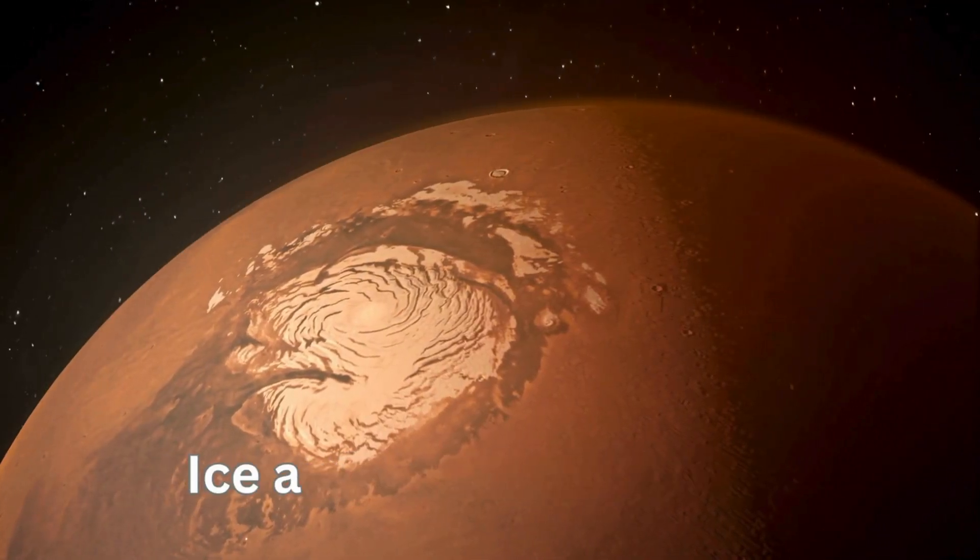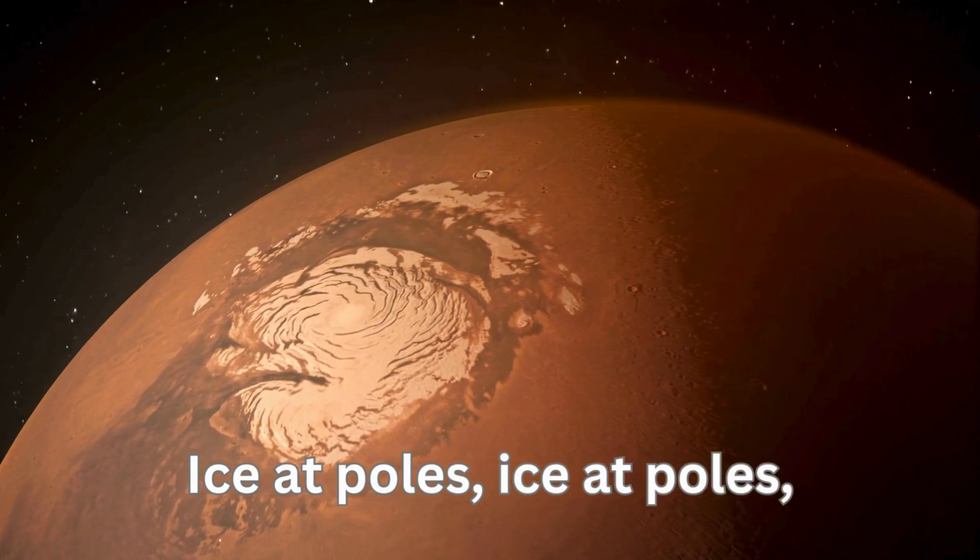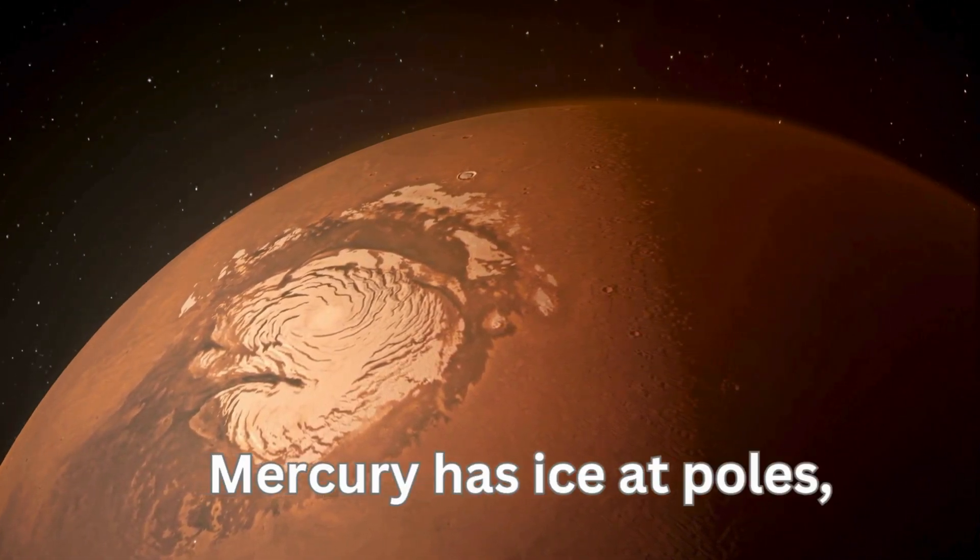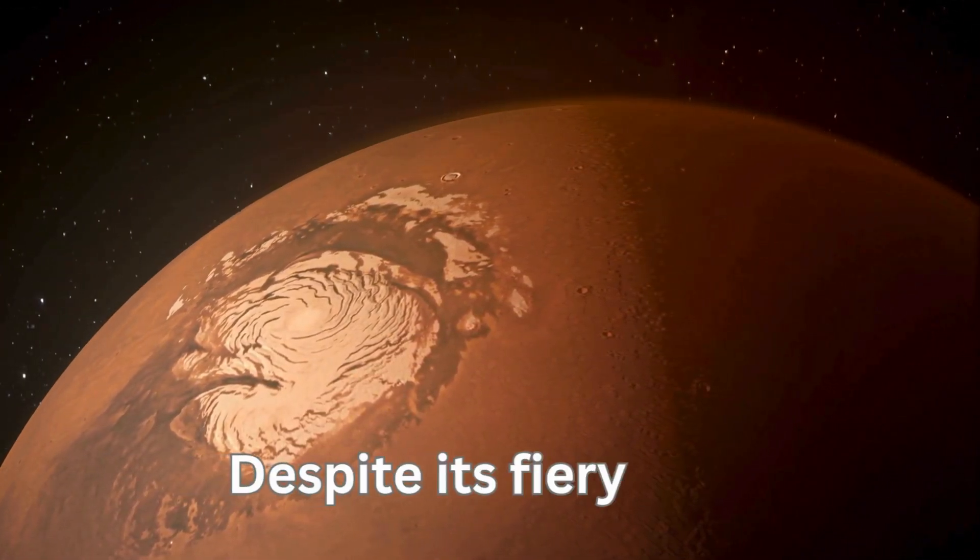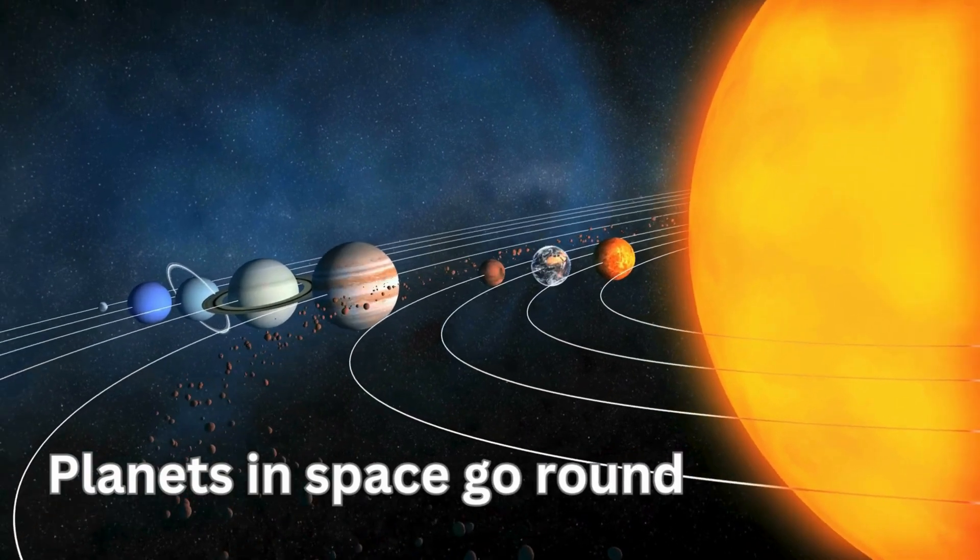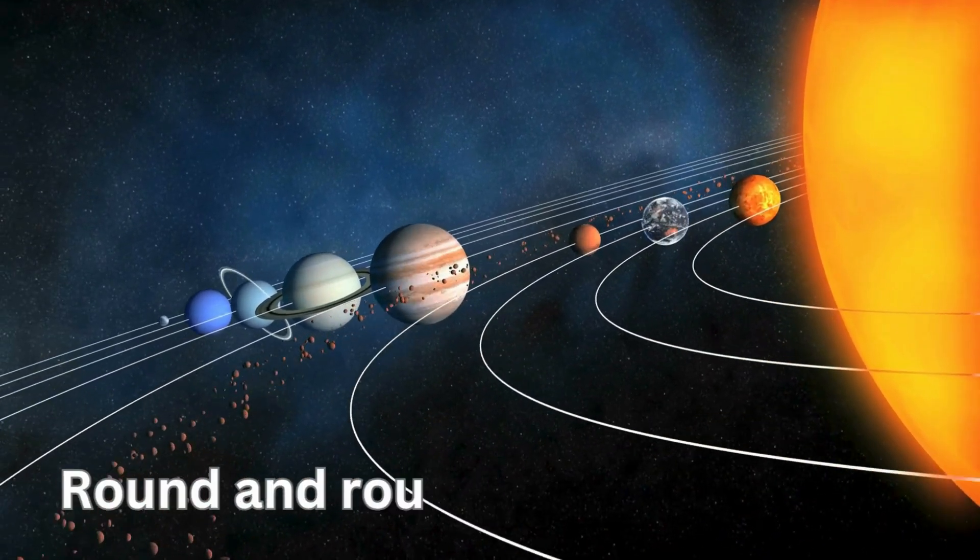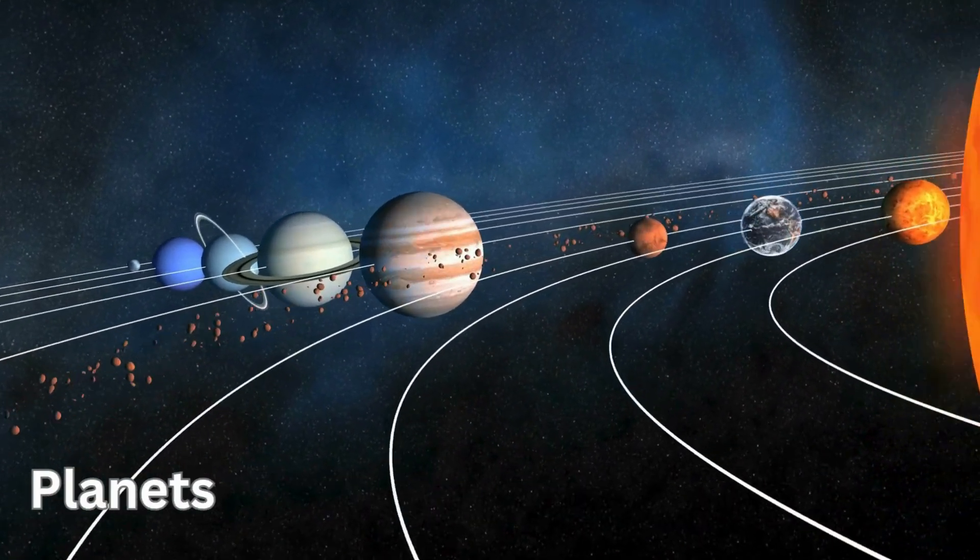Mercury has icicles, despite its fiery goals. Planets go round and round, round and round.